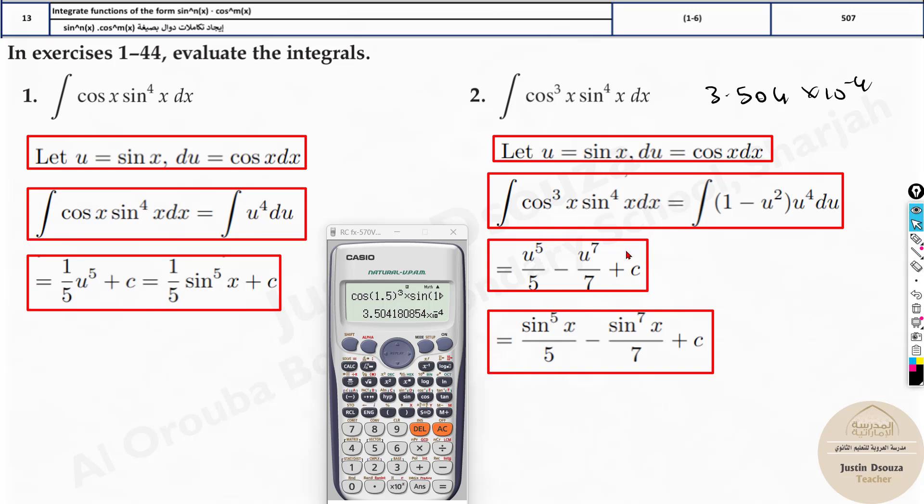Now next, you need to look into all the four options and you need to press shift d/dx and type the options as it is. It takes a bit of time, but you don't need to remember any rules. It's just putting in the calculator and you get the answer.